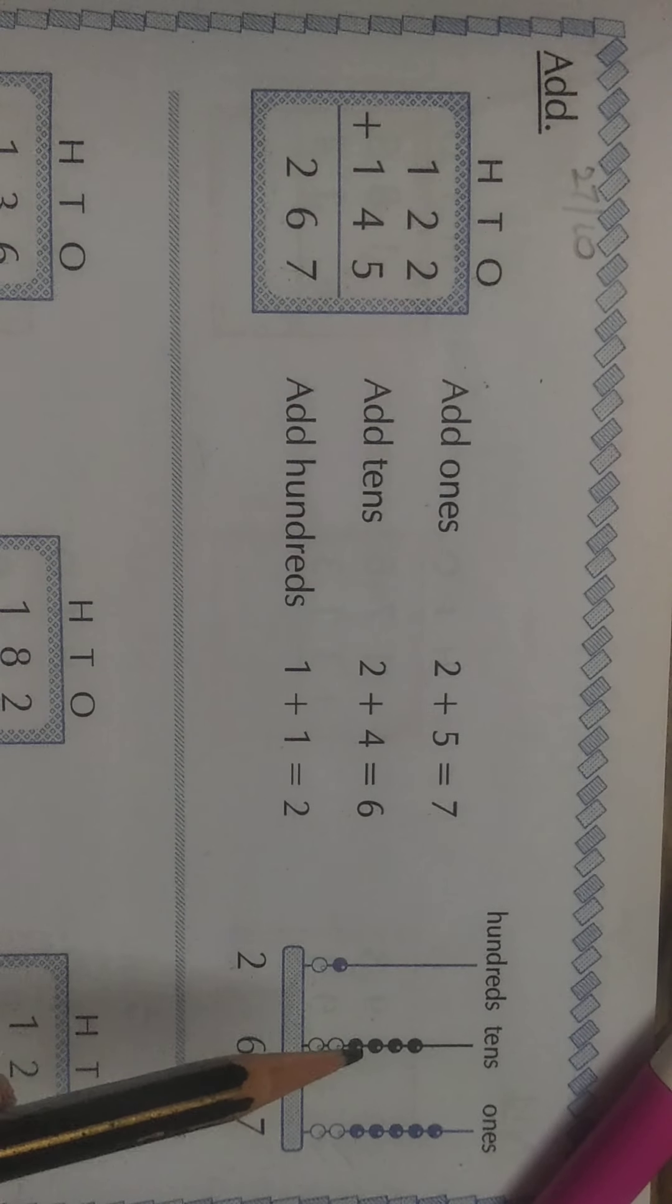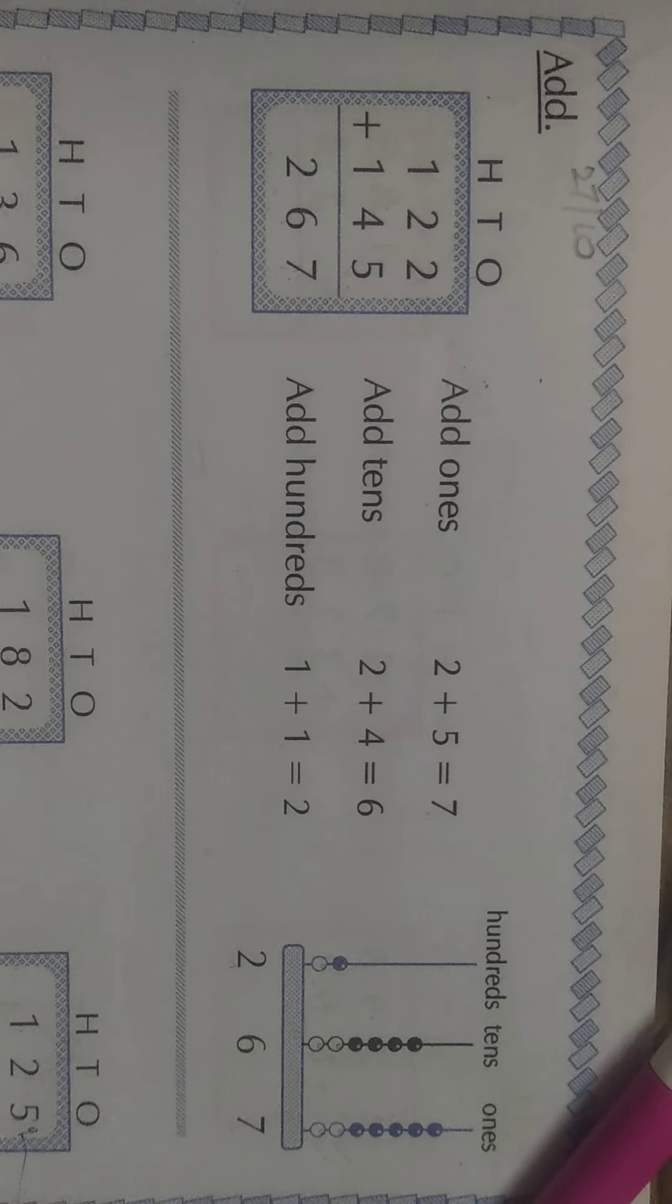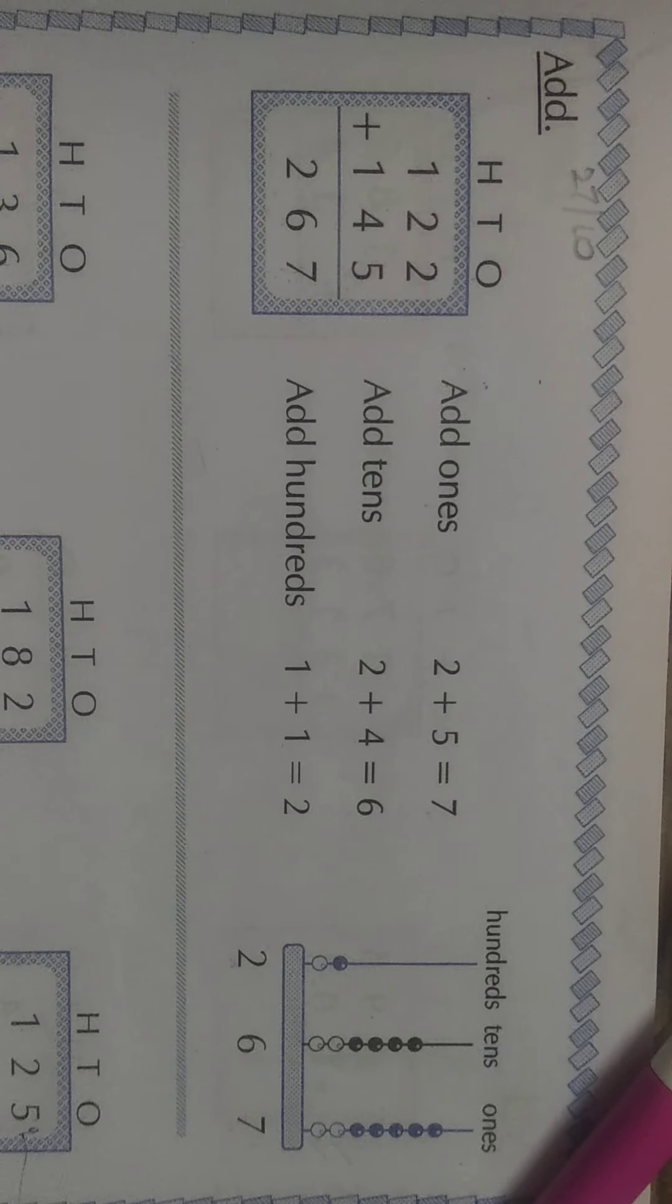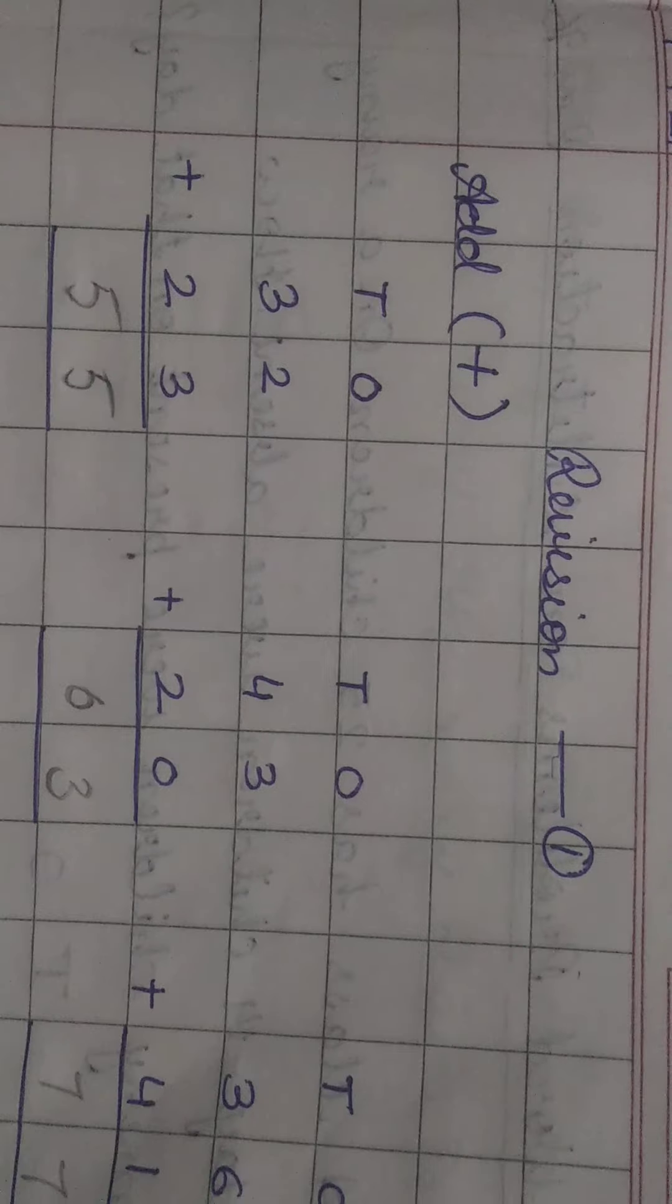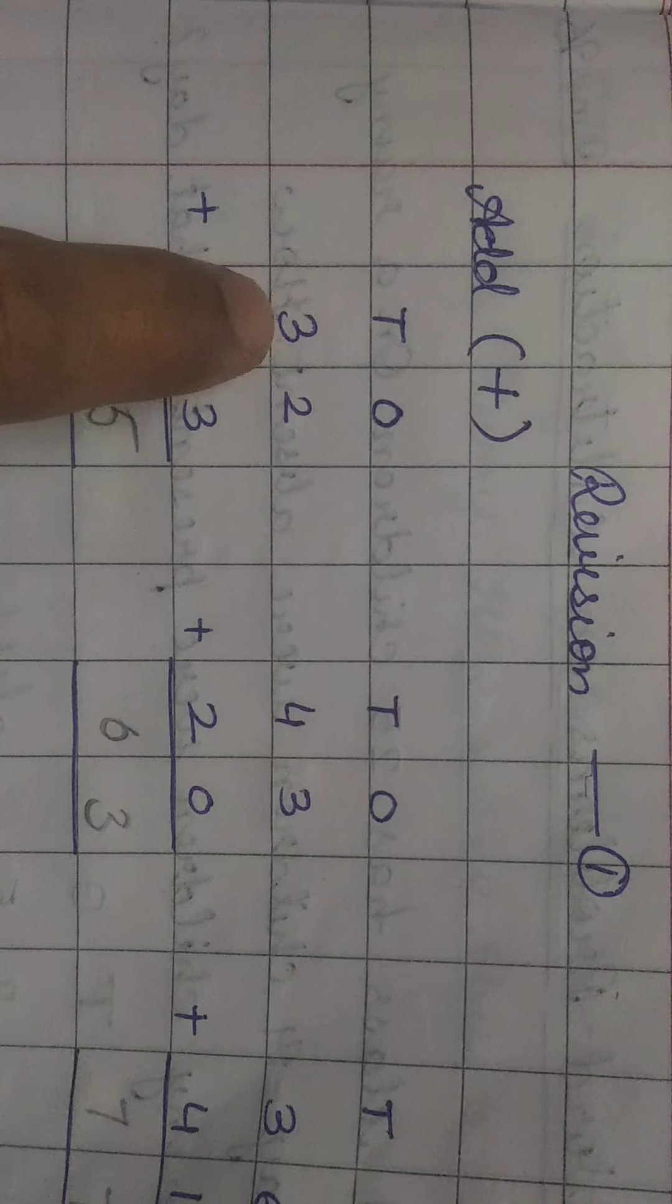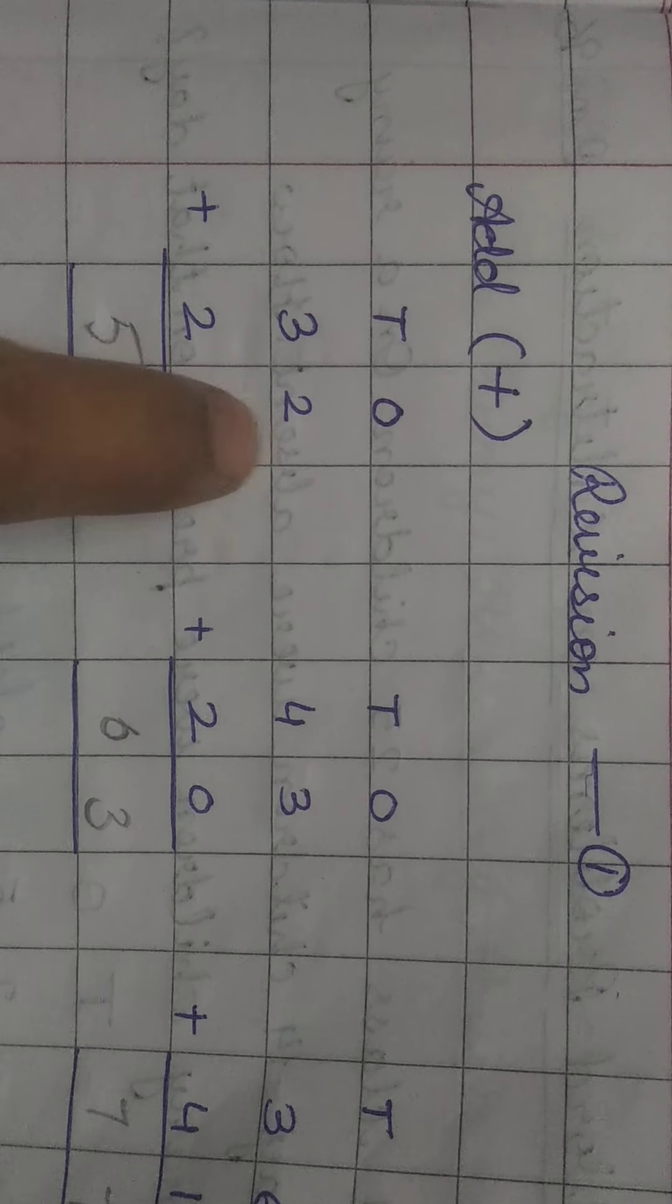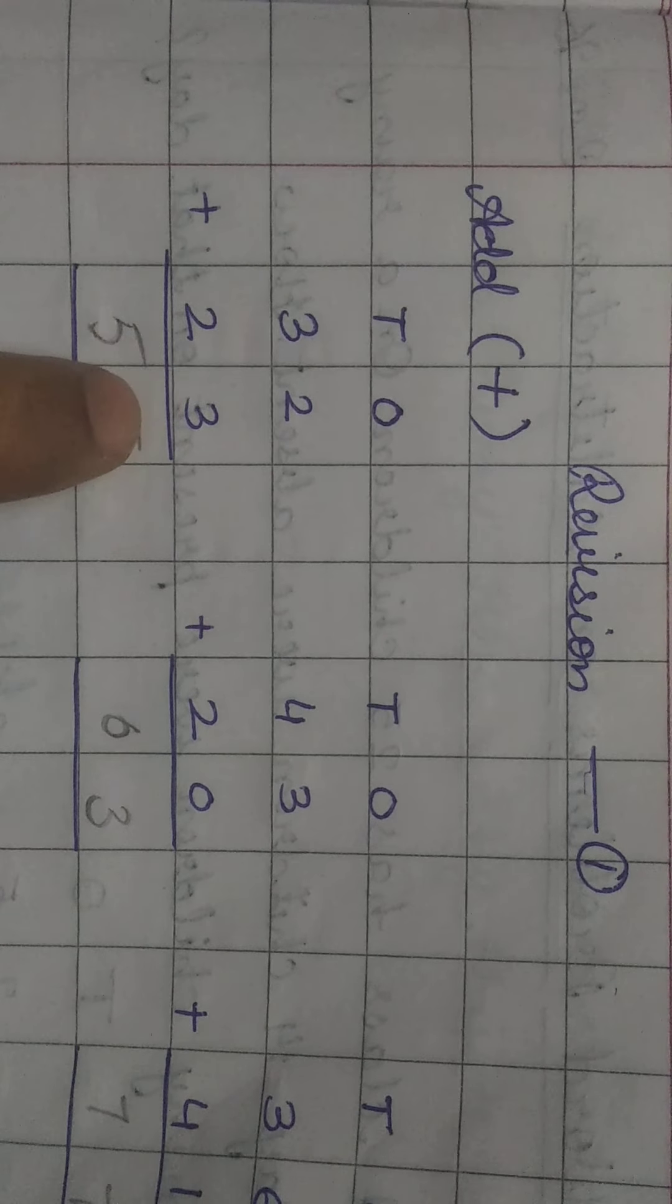Children, that too on the abacus. In our previous classes, in term 1 syllabus, children, you all have practiced the addition and subtraction of two digit numbers. Look at this. 32 is a two digit number. 23 is also a two digit number.